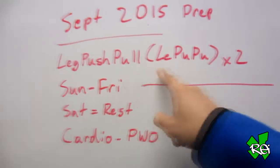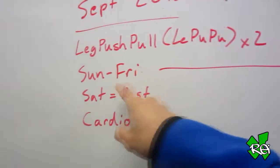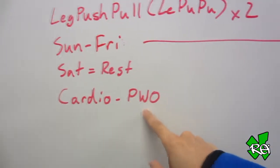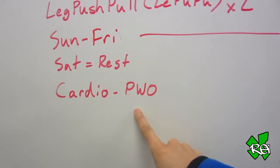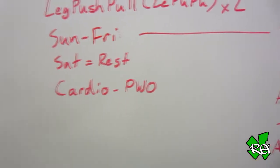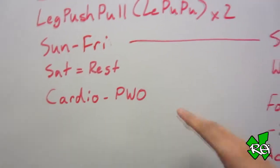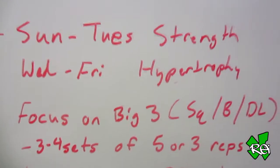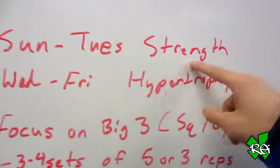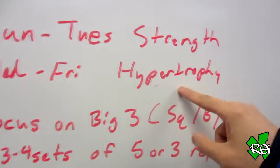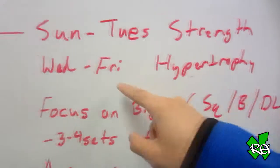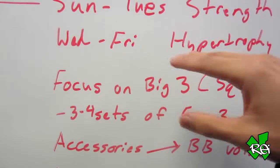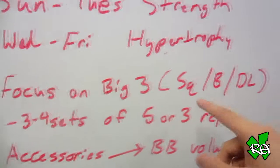So legs, push, pull times two, or like I call it leg poo poo times two. Sunday to Friday I would work out straight, so legs, push, pull, legs, push, pull, and then I would rest Saturday. Cardio would always be done post-workout. I've never done pre-workout cardio or cardio in the morning because I always wanted to get everything done all in one session. For the weight lifting, Sunday to Tuesday the first legs, push, pull would always be a strength day. But then Wednesday to Friday it would always be a hypertrophy block. For all six of those days I focused on the big three: squat, bench, and deadlifts.